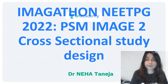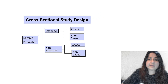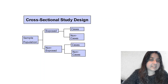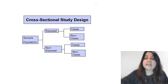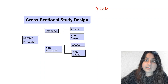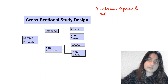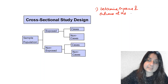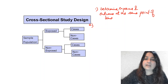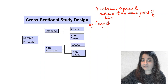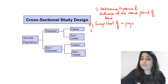Hi everyone, this is Dr. Neha. Let's continue with our second image, which is of cross-sectional study design. This is the image — there are no directions and no arrows in it. In a cross-sectional study design, we determine exposure and outcome both at the same point of time. It's like taking a snapshot of a population.